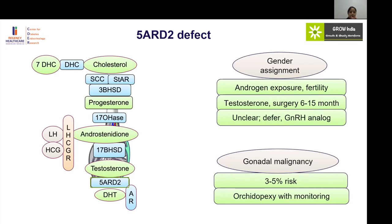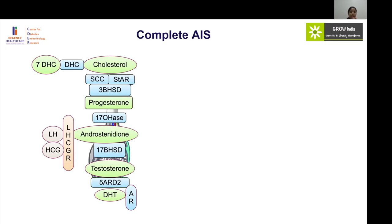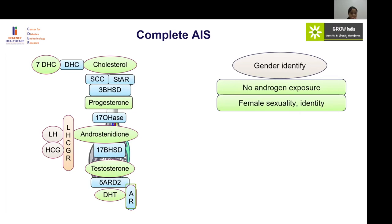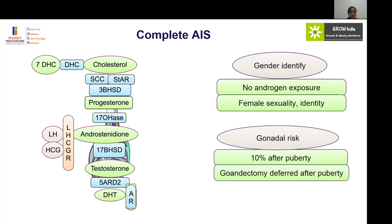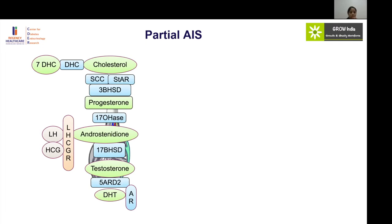In complete androgen insensitivity syndrome, there is no antenatal exposure to androgens, and gender identity is most commonly female. The gonads are present at the deep inguinal ring; the risk of malignancy is very low pre-pubertally but increases to around 10 percent after puberty. Therefore, gonadectomy should be deferred until puberty or until complete sexual development is achieved, with monitoring and repeat biopsy if needed to check for intratubular changes.